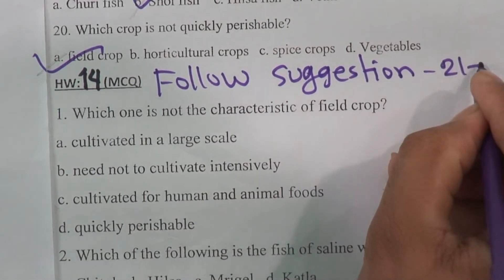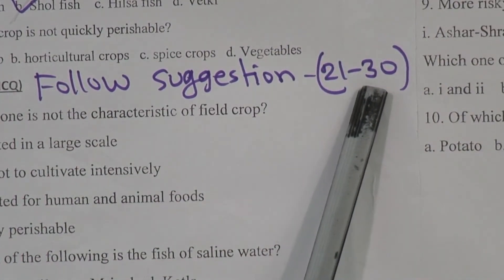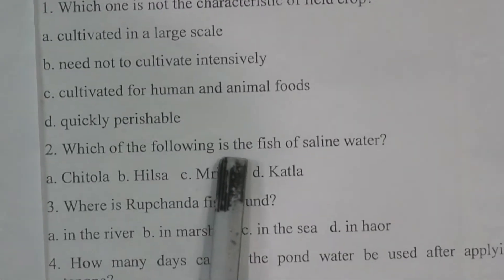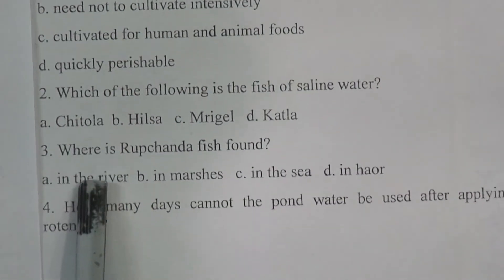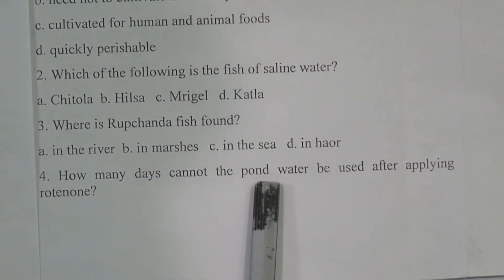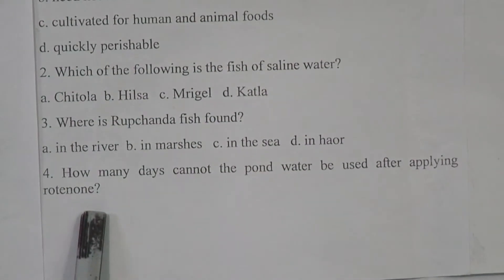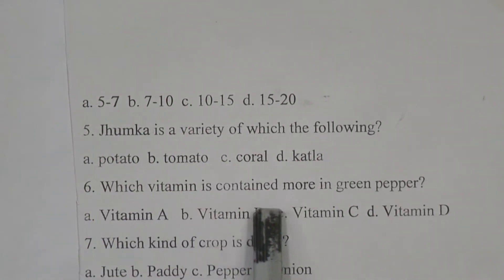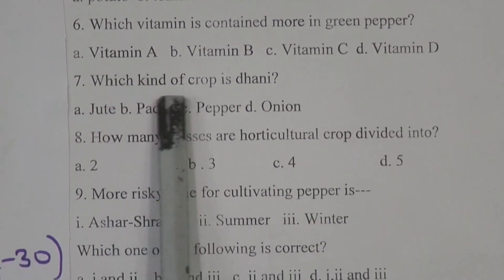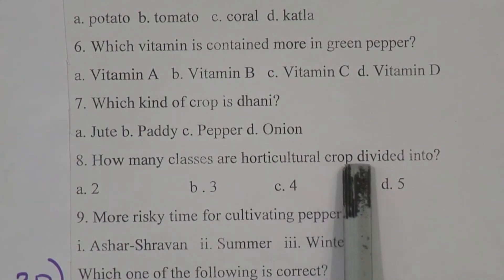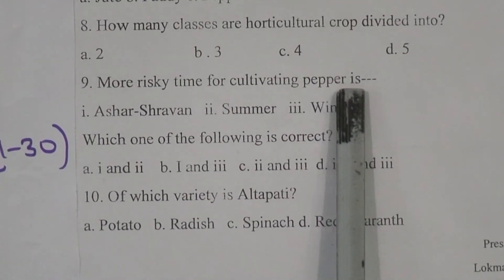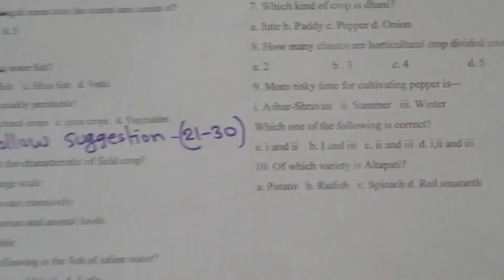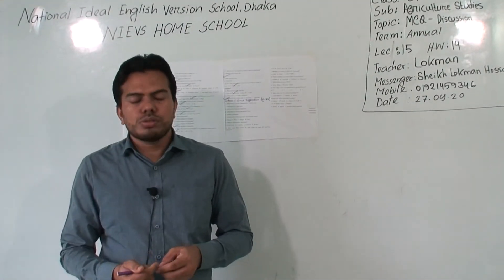Questions 21 to 30 — these 10 questions will be your homework. The questions are: which one is not a characteristic of field crop; which of the following is a fish of saline water; where is the fish found; how many days can pond water be used after applying rotenone; Jumka is a variety of which of the following; which vitamin is contained more in green pepper; which kind of crop and how many classes are horticultural crops divided into; the more risky time for cultivating pepper yeast; and the last one, of which variety is Altapati.